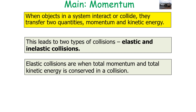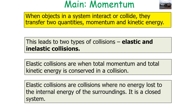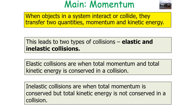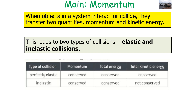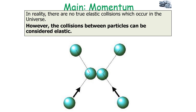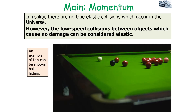Elastic collisions are when the total momentum and total kinetic energy are both conserved — no energy is lost to the internal energy of the surroundings; it's a closed system. Inelastic collisions are when total momentum is conserved but total kinetic energy is not. In reality there are no true elastic collisions in the universe; however, collisions between particles can be considered elastic, as can low-speed collisions between objects which cause no damage — for example, snooker balls hitting each other or a low-speed car crash.